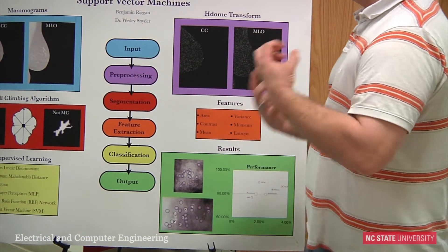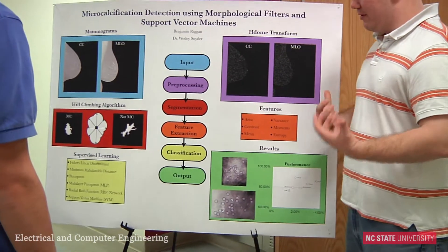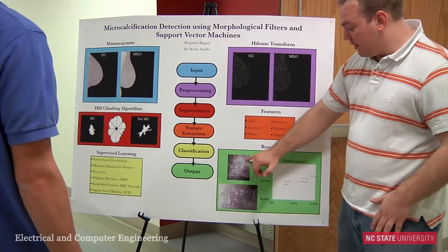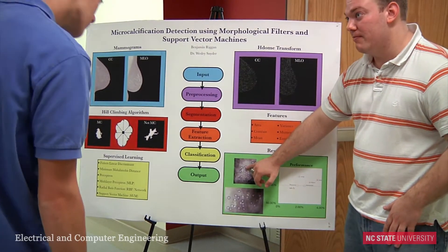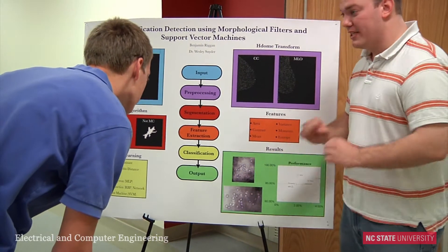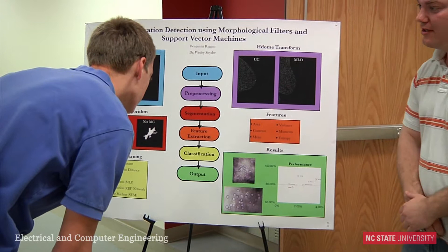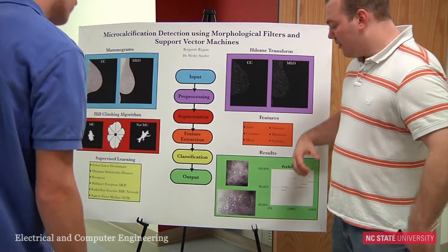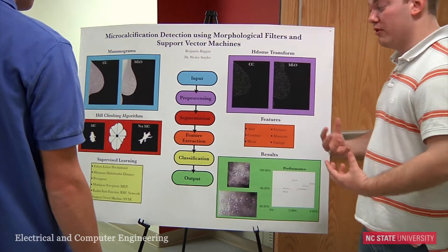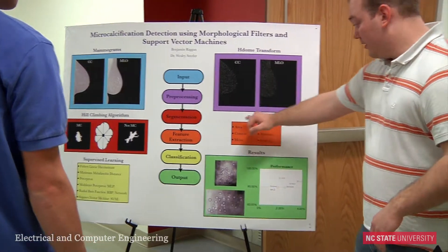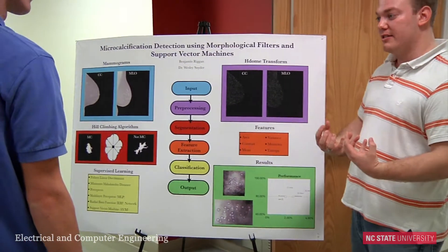We give it examples — a human will actually pick out points, represented by these red dots here. So these are training points; we say that those are microcalcifications. The supervised learning techniques then learn, based on these measurements, what a microcalcification is.